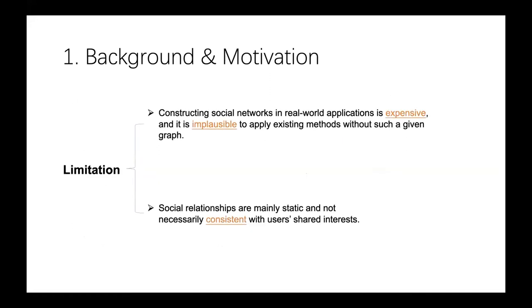Possessing a given and static social network brings two limitations. First, constructing social networks in real-world applications is expensive and it is implausible to apply existing methods without such a given graph. Second, social relationships are mainly static and not necessarily consistent with users' shared interests.